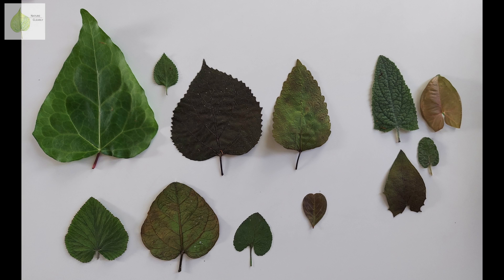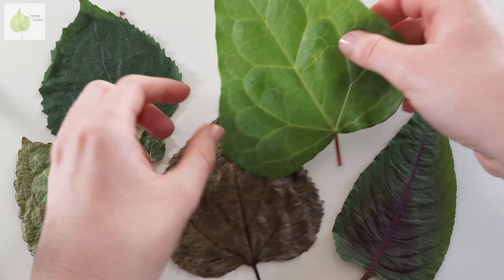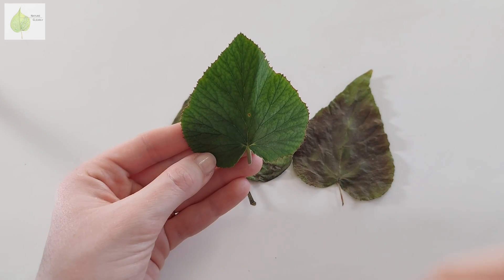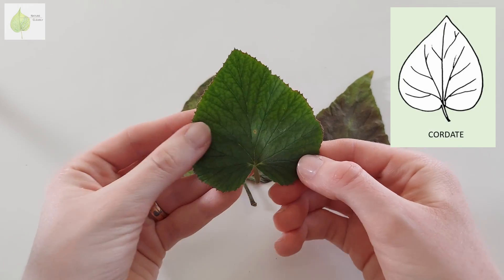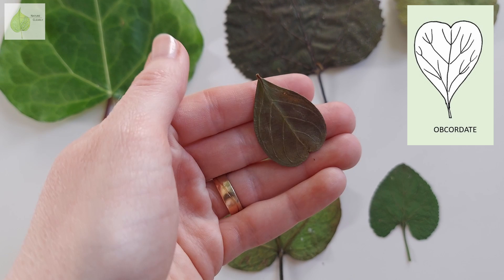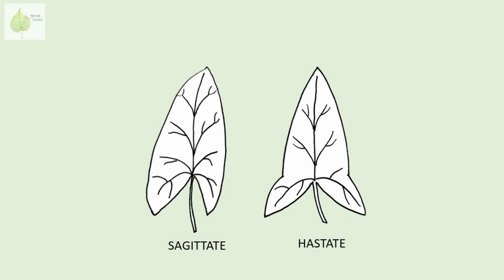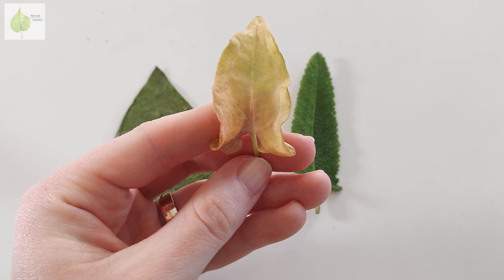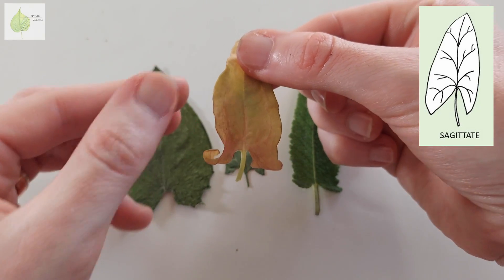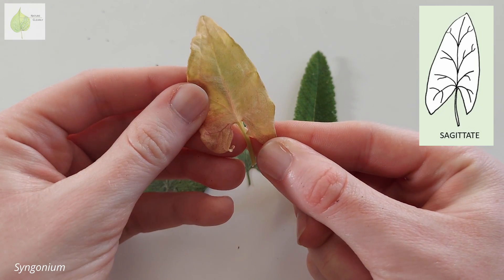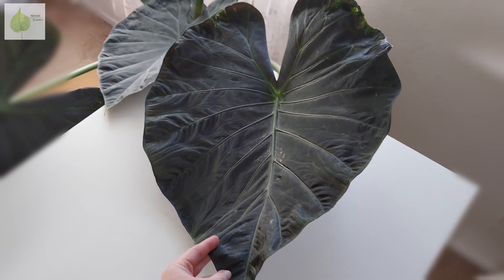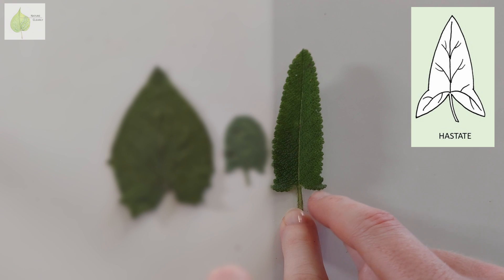Finally, the last category: triangular leaves. Leaves shaped as a triangle or the letter delta are called deltoid or deltate. When a leaf is more heart-shaped with curved margins around the base creating a notch, it is called cordate. Getting back to our inversion prefix, obcordate leaves look like inverted hearts. The last two types have an overall elongated triangle shape: a sagittate leaf is in the shape of an arrowhead with two lobes pointing straight down at its base — the family Araceae, with members such as Syngonium, have this type. And if the lobes turn outwards as opposed to downwards, we talk about hastate leaves.